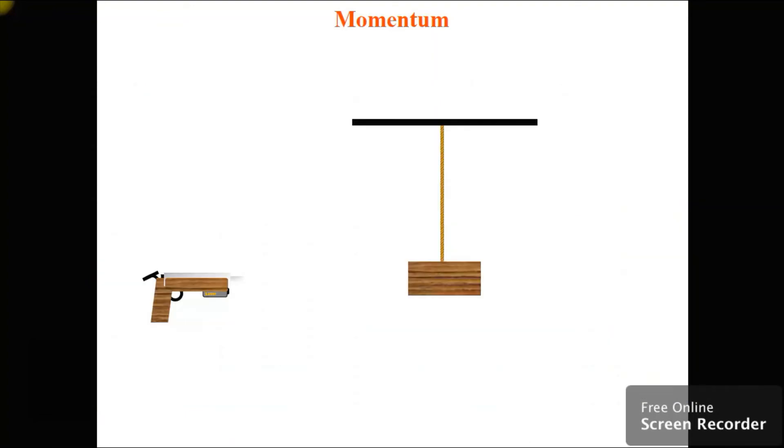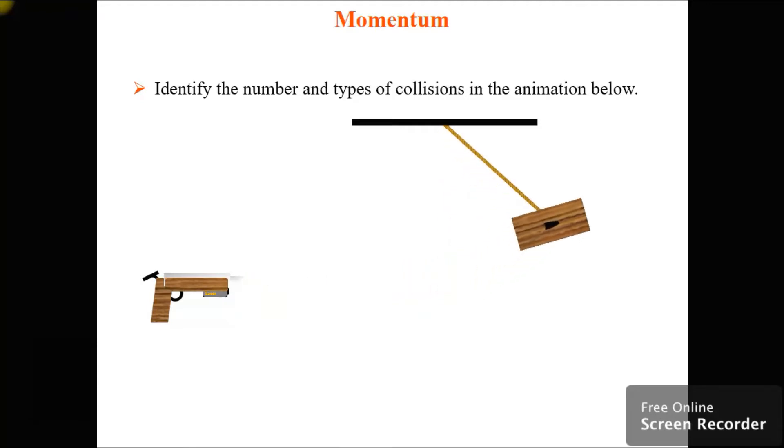This is a classic, and people do this in the real world all the time. You shoot something into a block that's sitting on a pendulum. Then you measure how high the pendulum goes, and that tells you exactly how much energy went into it. So turn on the laser so you know you're going to shoot right at the block. Bang! Yep, they do stuff like that all the time. So what was the collision? The bullet into the block.